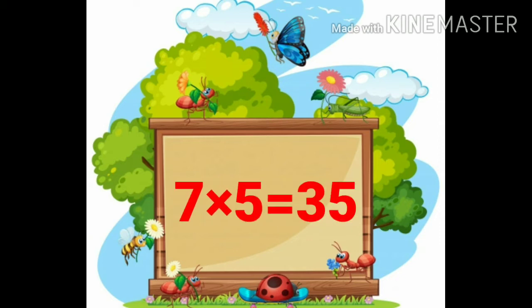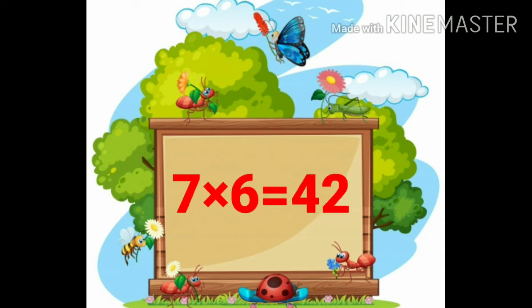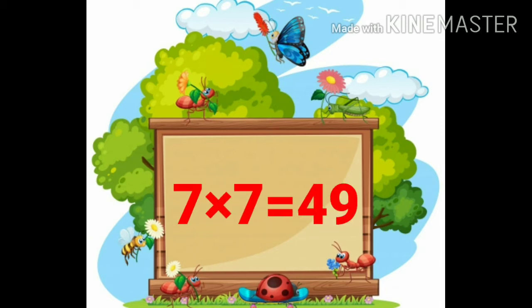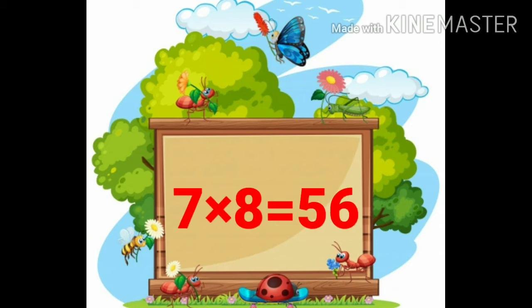7 5's are 35. 7 6's are 42. 7 7's are 49. 7 8's are 56.